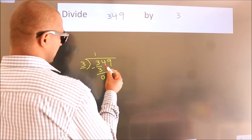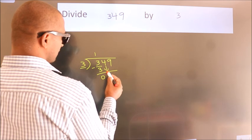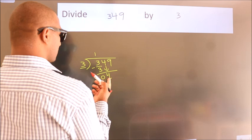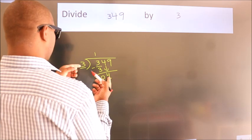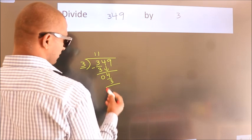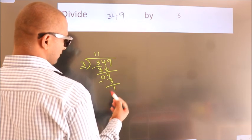After this, bring down the beside number. So 4 down, so 4. A number close to 4 in the 3 table is 3 times 1 is 3. Now, we subtract, we get 1.